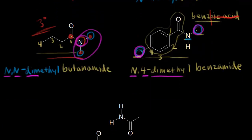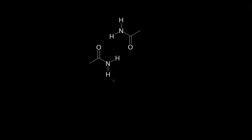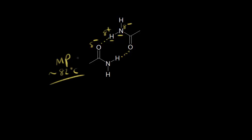In terms of physical properties, acetamide is actually a solid at room temperature and pressure due to extensive hydrogen bonding — the partial negative oxygen interacts with the partial positive hydrogens on nitrogen. Its melting point is approximately 82°C, and its boiling point is much higher, around 221°C, due to the very strong intermolecular forces between amide molecules.